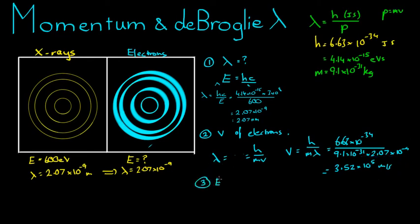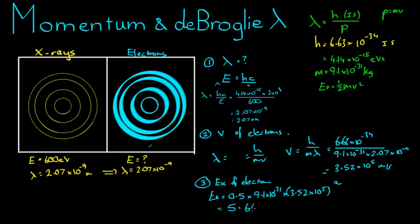The third step is doing the kinetic energy of electrons calculation. And the kinetic energy formula equals 0.5 mv squared. E_k equals 0.5 times 9.1 times 10 to the negative 31, mass of the electron, times 3.52 times 10 to the 5 squared. And I have that coming to 5.64 times 10 to the negative 20. And since this is the kinetic energy formula, it's in joules.